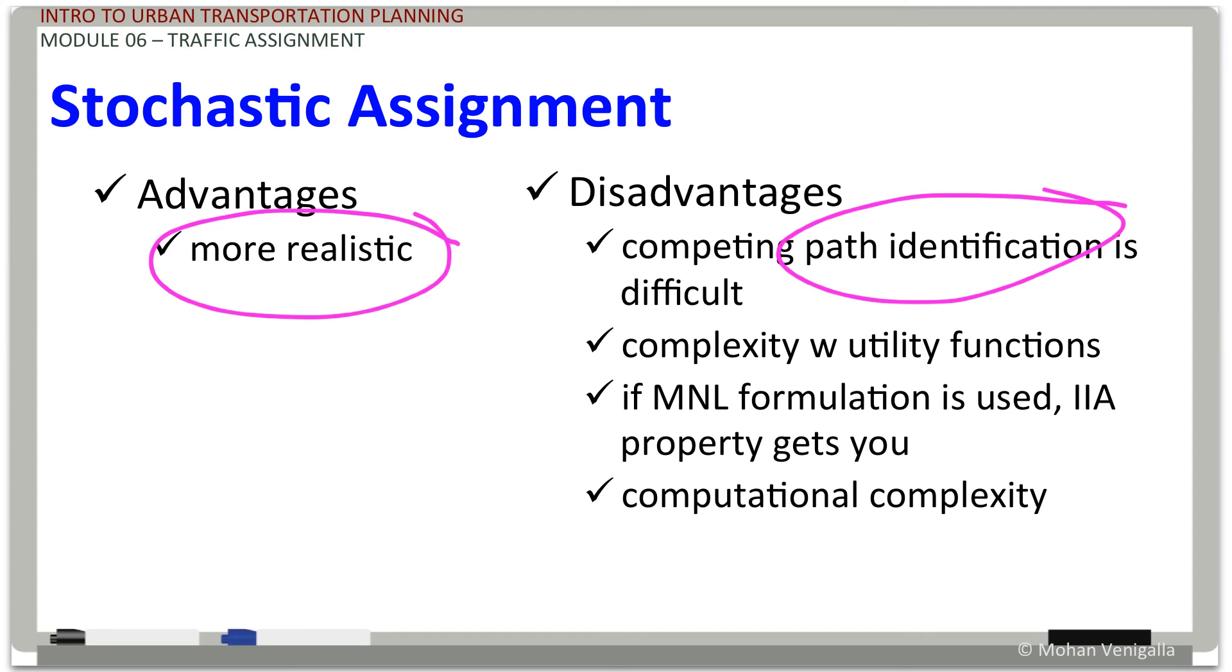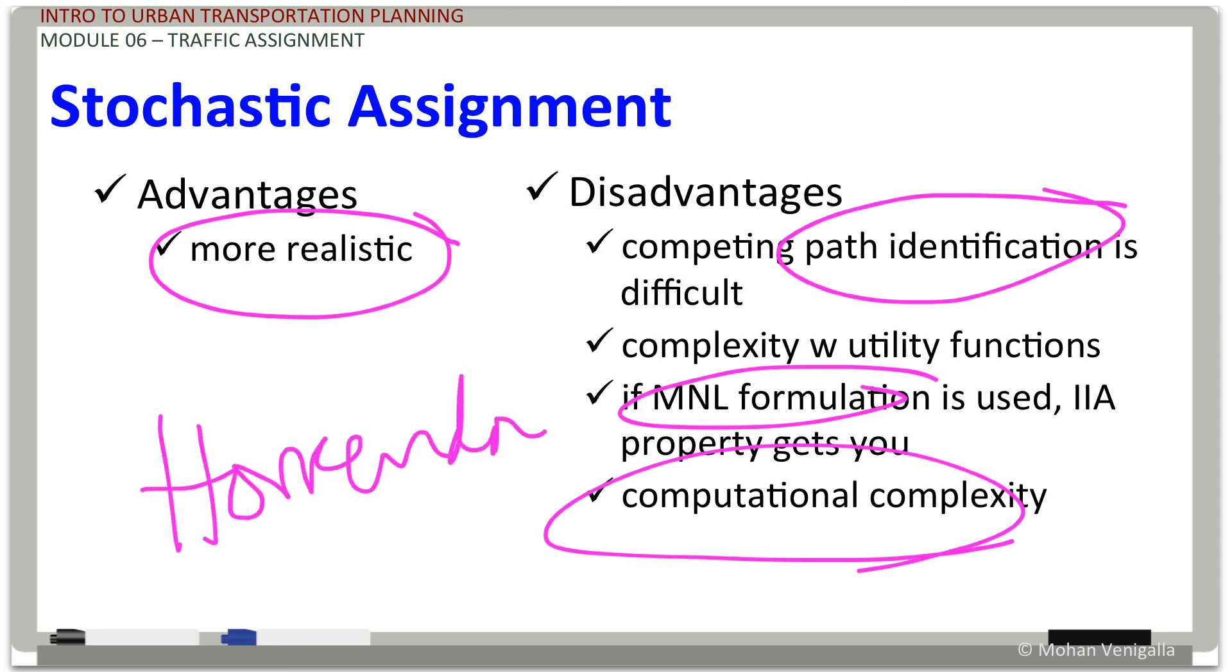It may be for the traveler. They know what those competing alternatives are. But to develop an algorithm that picks up, that goes into the traveler's mind and finds them, it's impossible. And once you identify those paths, you have to find a utility function. And then do a lot of multinomial formulation, etc. Computational complexity is going to be horrendous. So, this is not often done.